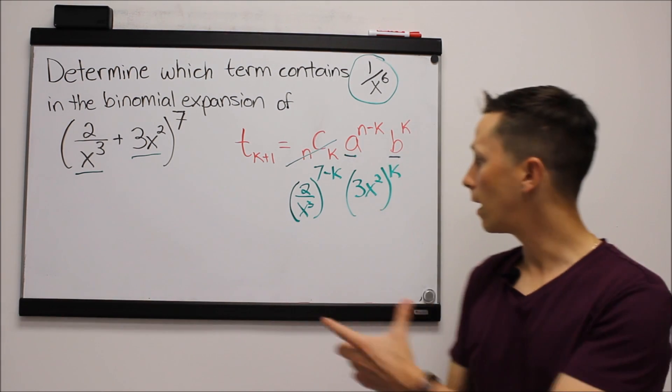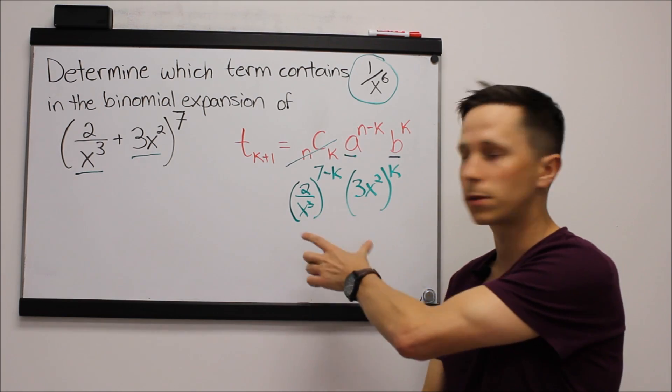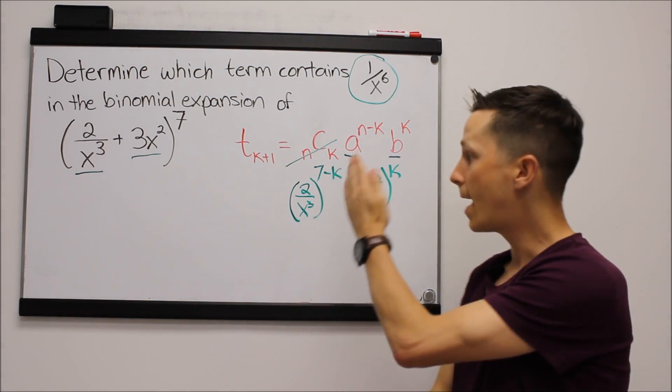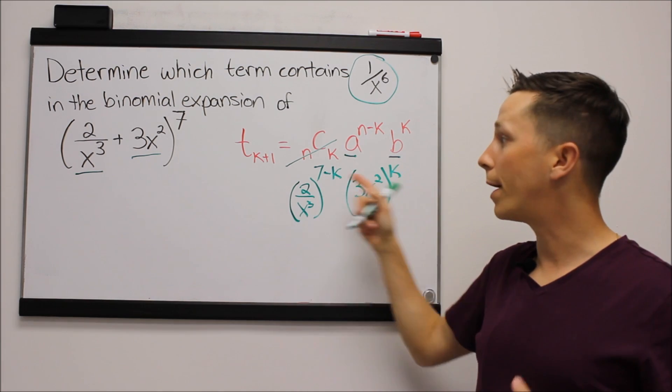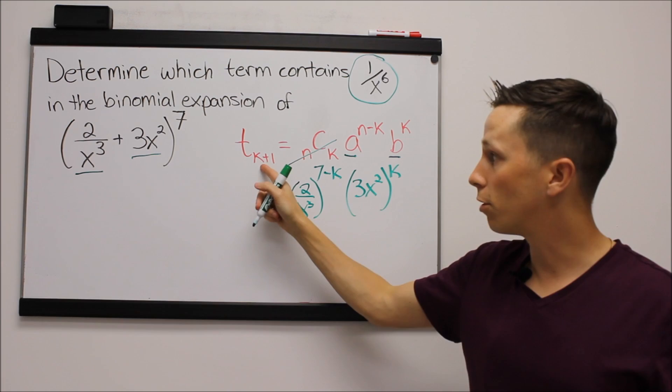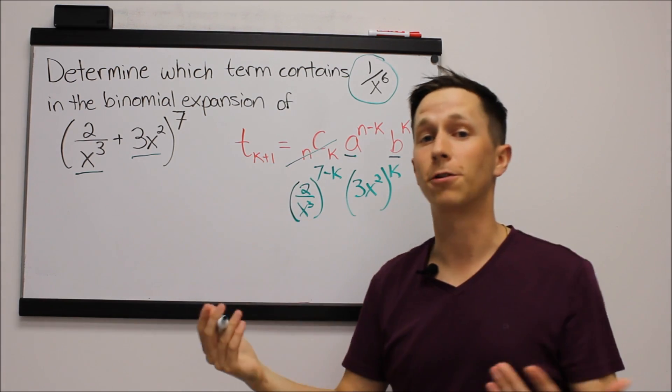So now it's about saying, okay, every term is going to take on this form, and k is just going to increase, right? k is going to increase from 0 all the way to 7, because 0 would be 0 plus 1, that's our first term.